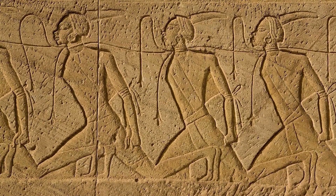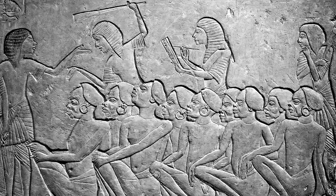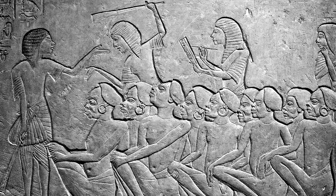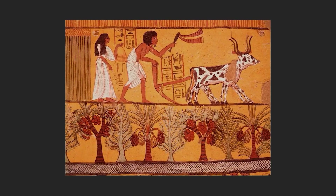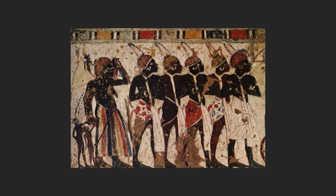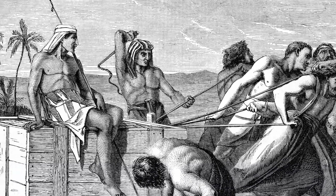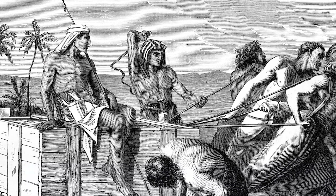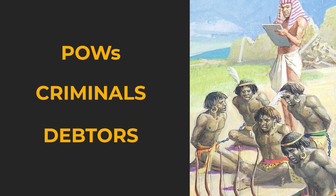When one thinks of ancient slaves, ancient Egypt certainly springs to mind. In ancient Egypt, slavery was a common practice and played an important role in Egypt's economy. Slaves were used for labor and agriculture, mining, and construction, as well as serving as soldiers and domestic servants. Slavery in ancient Egypt was not based on race, and enslaved people came from various backgrounds, including prisoners of war, criminals, and debtors.